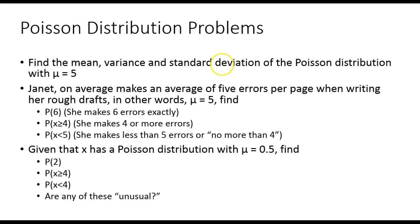Let's say, find the mean, variance, and standard deviation of the Poisson distribution with a mean of five. It's kind of a silly question when I tell you the answer to it. Here's another one: Janet, on average, makes an average of five errors per page when writing her rough drafts. In other words, the mean is five. Given that x has a Poisson distribution with a mean of 0.5, find the following, or are any of these unusual? So let's take a look.